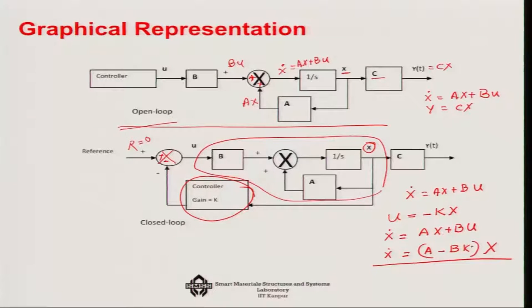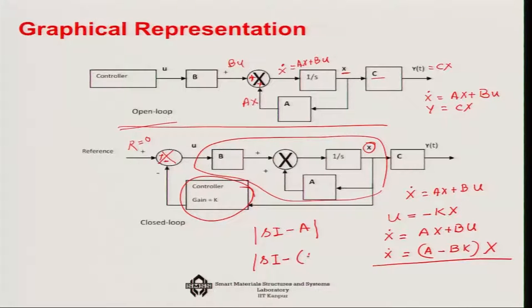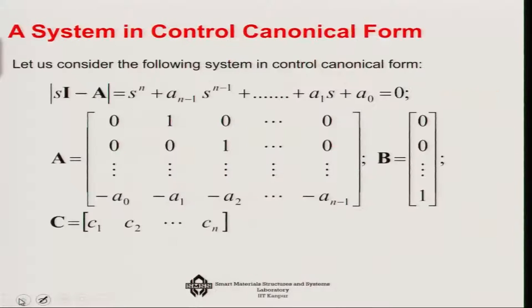This A minus BK clearly tells us that the earlier system without feedback had characteristic poles or eigenvalues from the determinant of SI minus A. But now we have a new system whose characteristic equation is the determinant of SI minus A minus BK. So A has changed, meaning the eigenvalues change. By suitably choosing the gain K, we can actually place all the eigenvalues at our required positions — that is what we will be learning today.